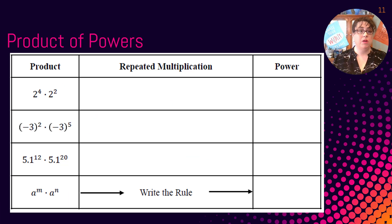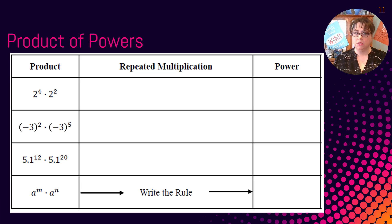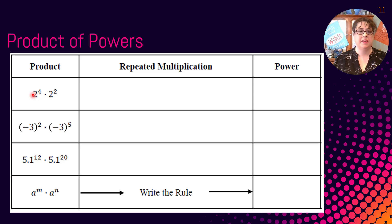We are going to begin by looking at Product of Powers on a table and look at some patterns. If you recall, our base is the larger number and our exponent tells us how many times we are multiplying out our base. So here we can see we're going to multiply out our base four times and the same base two times.